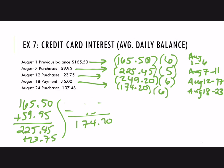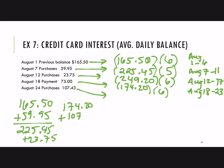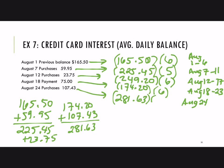Then we need to consider the balance on the 24th. Another purchase is made, so we had $174.20 and add $107.43, giving a new balance of $281.63. That balance is carried from August 24th all the way through August 31st — another eight days.